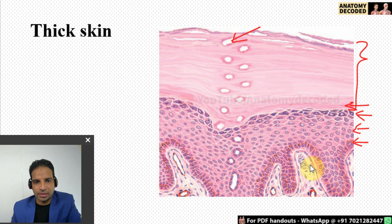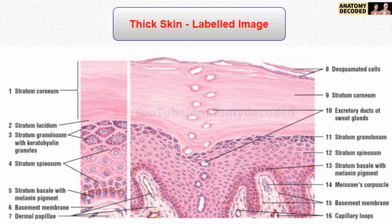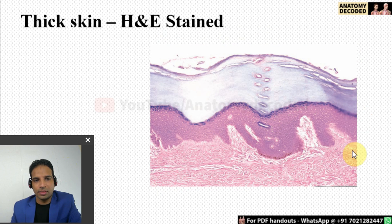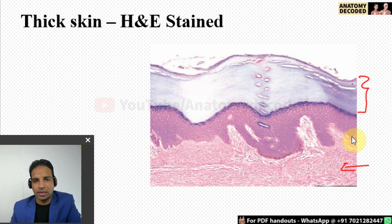Another structure seen here is a Meissner's corpuscle. These are the various structures seen in thick skin. This H&E stained slide of thick skin shows the thick stratum corneum, multiple layers of the epidermis, and the dermis. There is no hair follicle, hair shaft, or sebaceous gland visible. These are the three differentiating points between thin skin and thick skin.